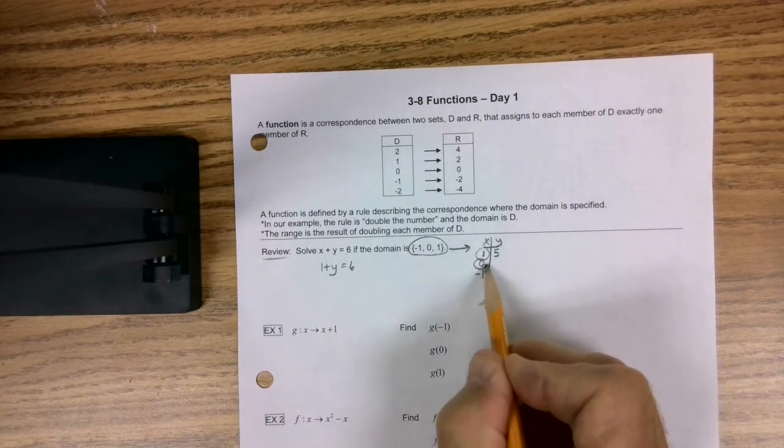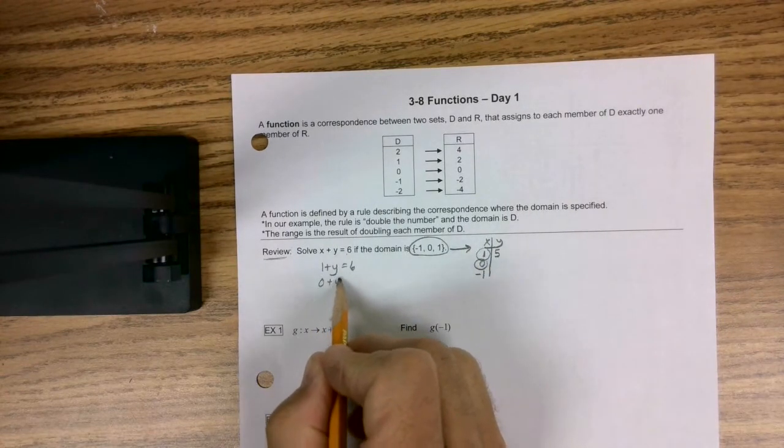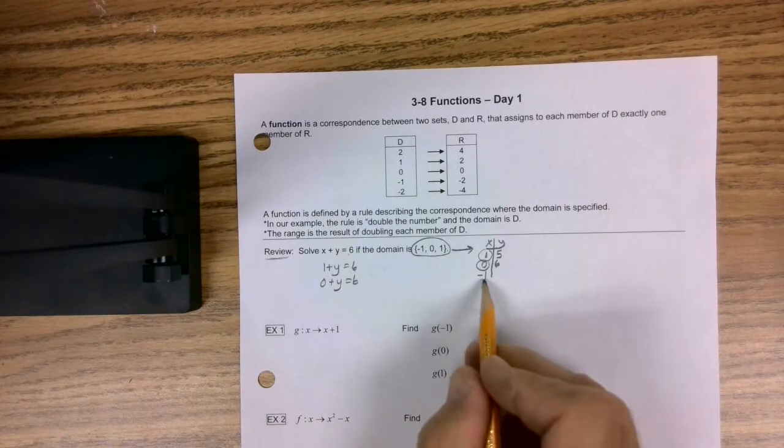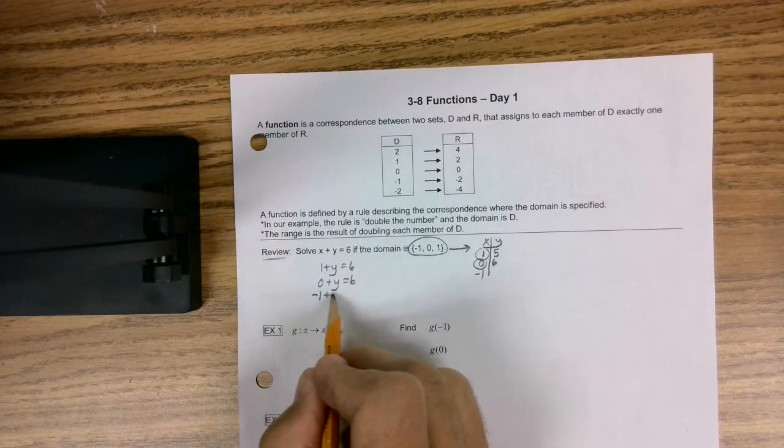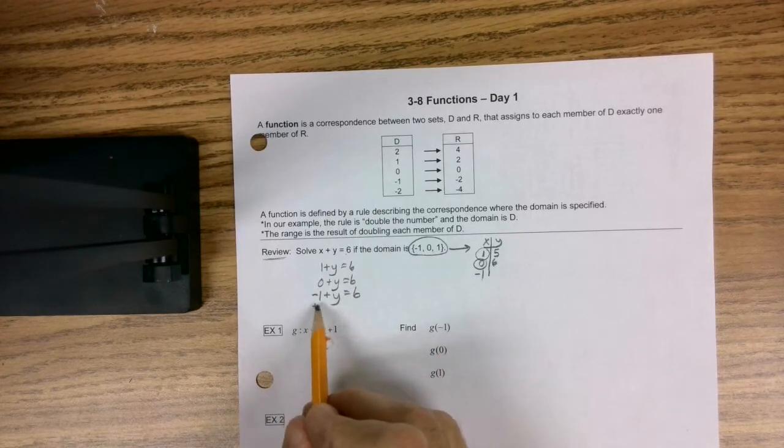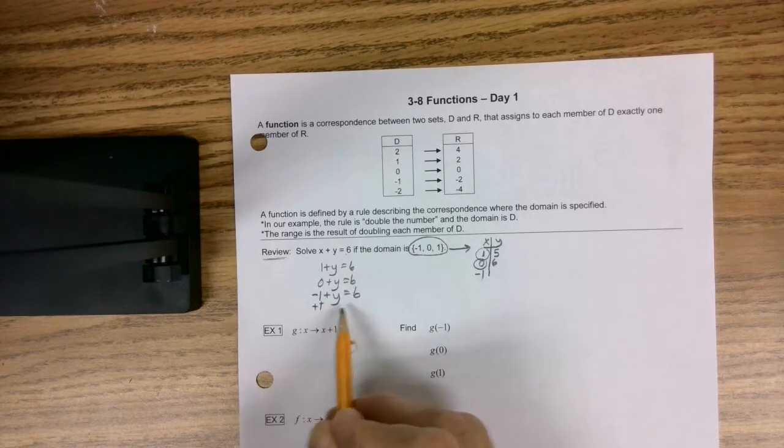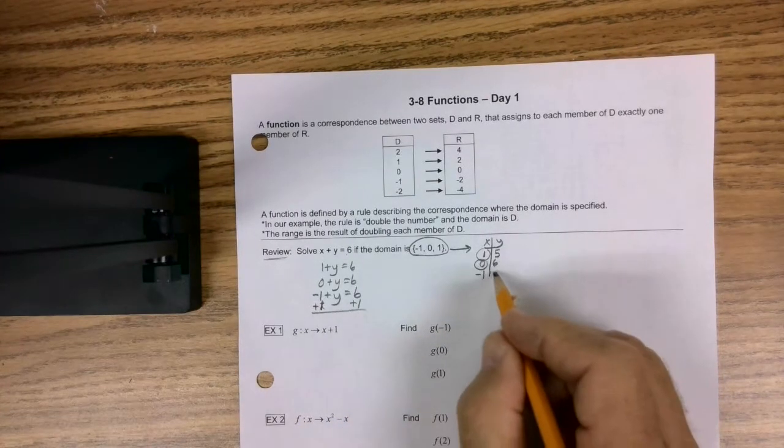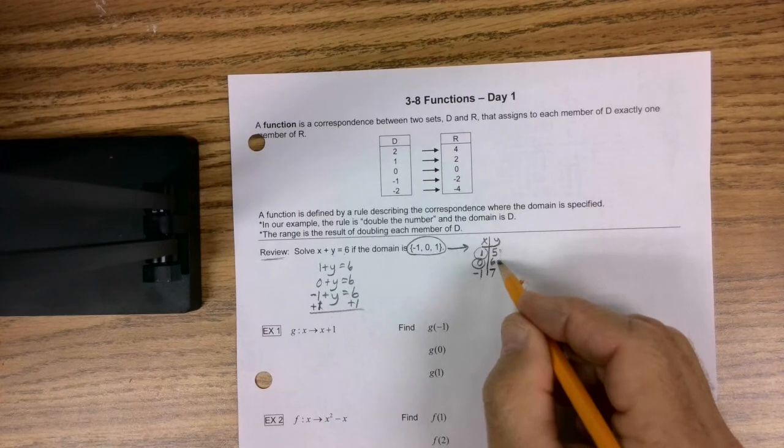Well, I can see that would spit out a 5. If I put in 0, I'd get 0 plus y equals 6. Well, that would spit out a 6. If I put a negative 1 in there, maybe you'd need to have me show my work. But I'm going to add 1, and I would get y equals 7. You can see the pattern developing anyways.